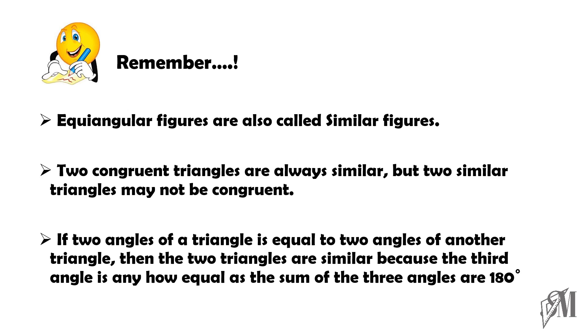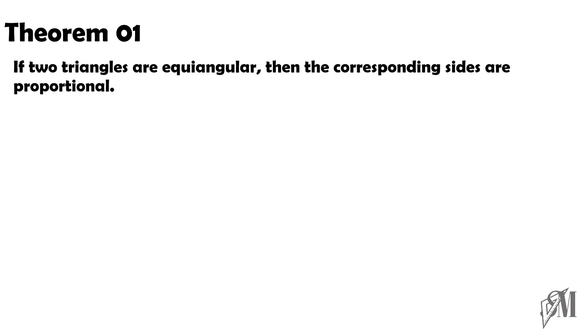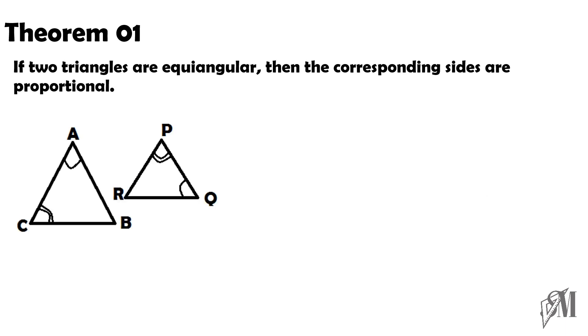Now let us look into the first theorem on equiangular triangles. The theorem says: if two triangles are equiangular, then the corresponding sides are proportional. Now look at this diagram. There are two triangles ABC and PQR, and some angles are marked as equal.